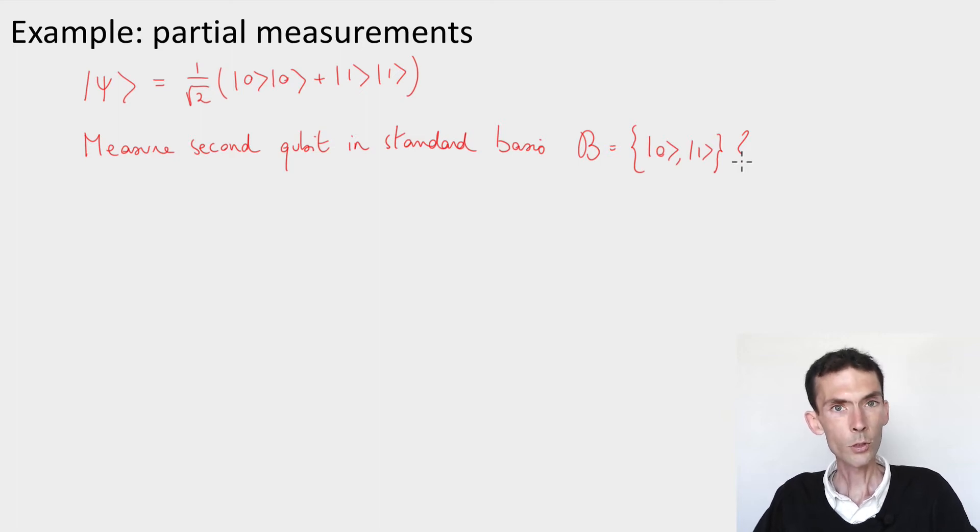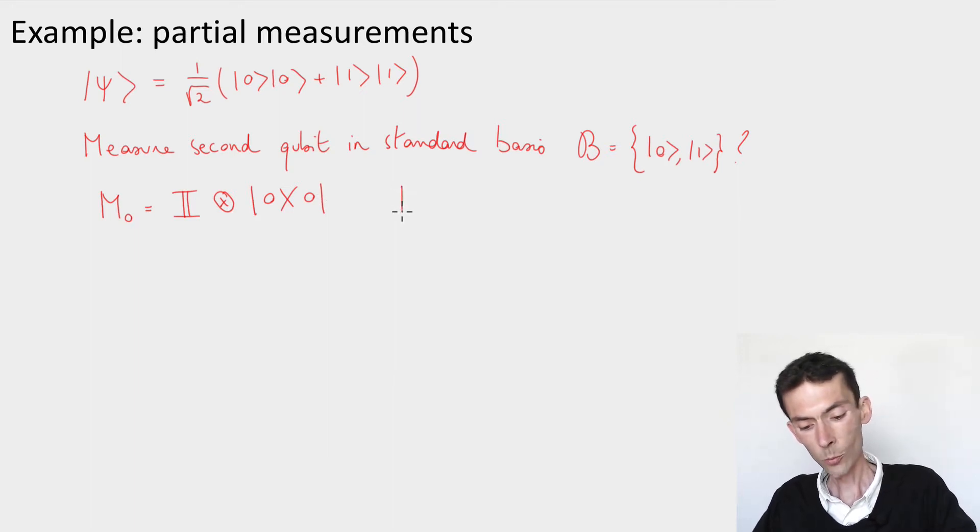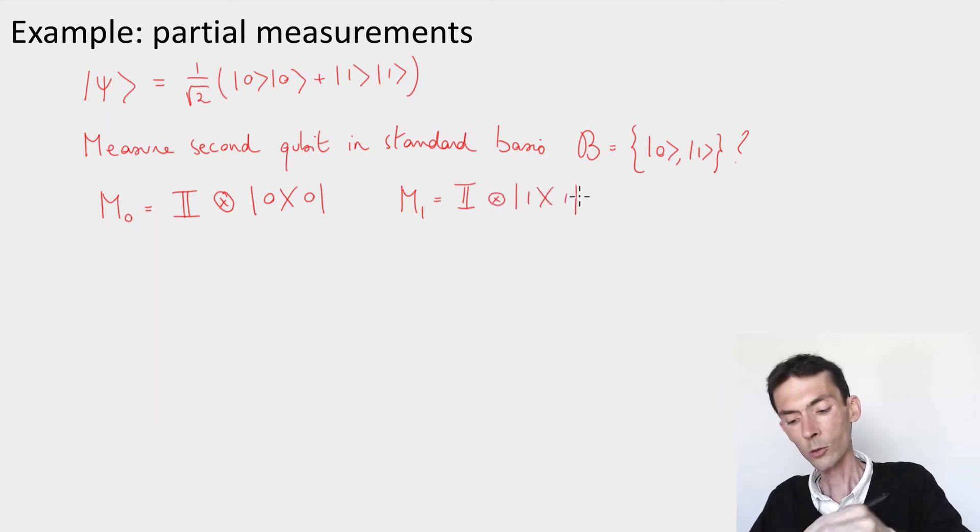So it's natural to introduce the following two measurement operators. M₀, this will be an operator that does nothing on the first qubit, the identity, tensor the projection on the standard basis state 0 for the second qubit. And similarly, I can define an operator M₁, which is the identity, tensored with projection on 1 on the second qubit.